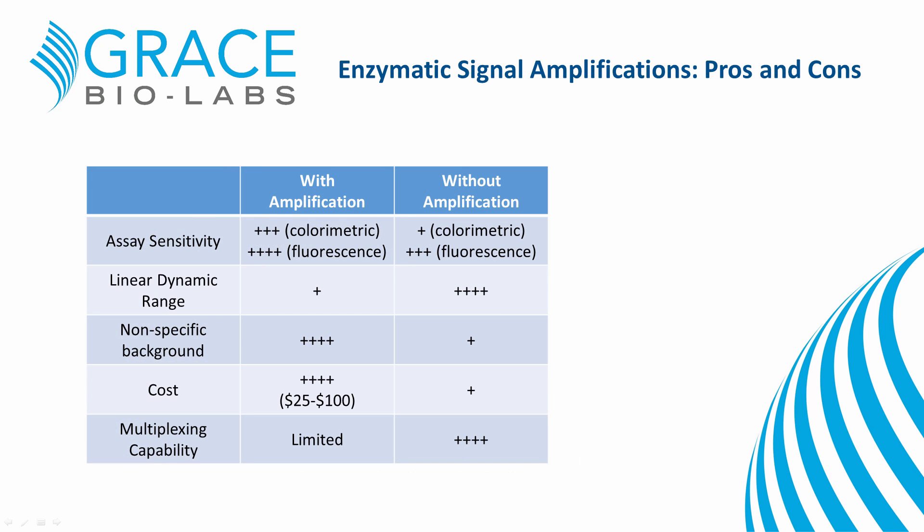Signal amplification can result in higher assay sensitivity regardless of the detection method. Due to the increased sensitivity with fluorescence, in many cases one can bypass amplification and obtain similar sensitivity to colorimetric endpoints after enzymatic signal amplification. This results in a much broader linear dynamic range and can result in lower nonspecific backgrounds. More importantly, for some users, assay cost can be greatly reduced. In addition, no amplification allows for increased multiplexing options.